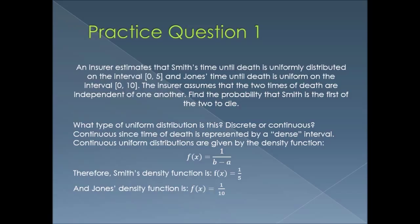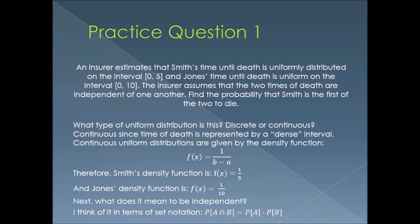Now, the problem states that the two times of death are independent of one another. Independence means the probability of A and B equals the probability of A times the probability of B. In this case, A and B represent our density functions, so the combined density function would be 1/50.